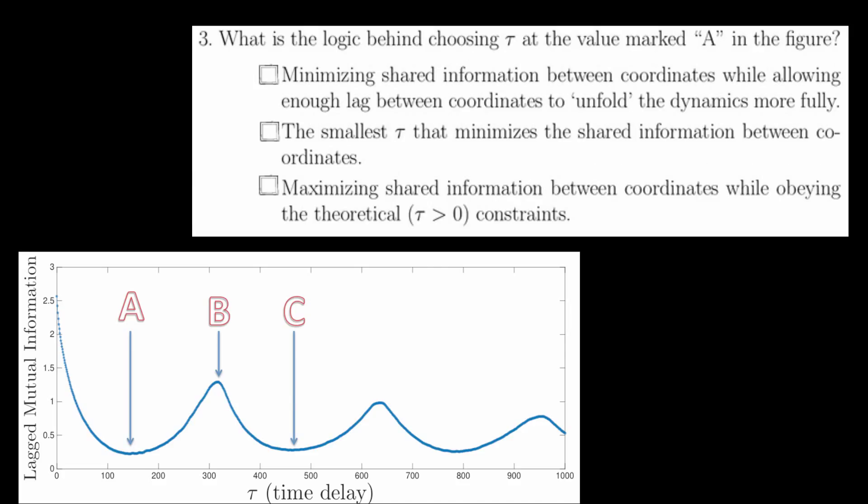Question 3 asks which of the following is the logic behind choosing tau as the value marked A in the figure. As we learned in the lecture, this is the smallest tau that minimizes the shared information between coordinates.